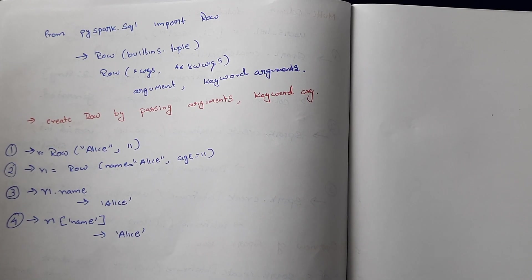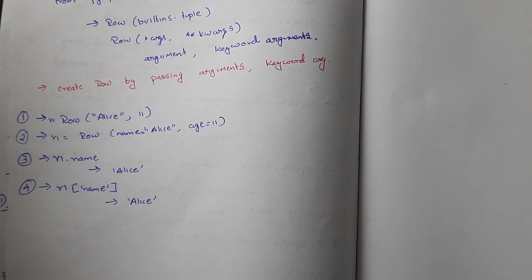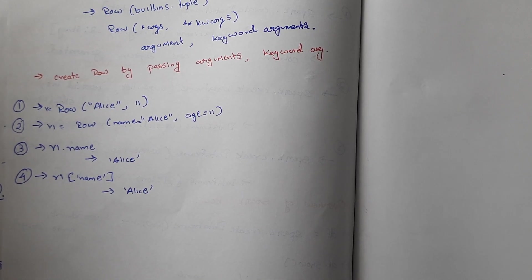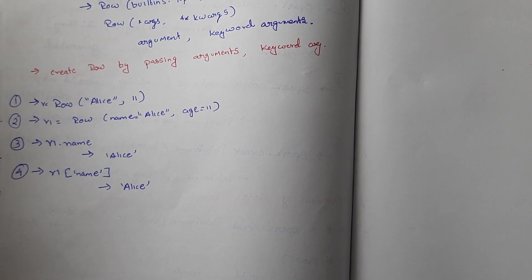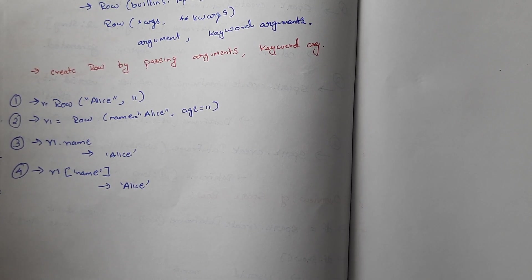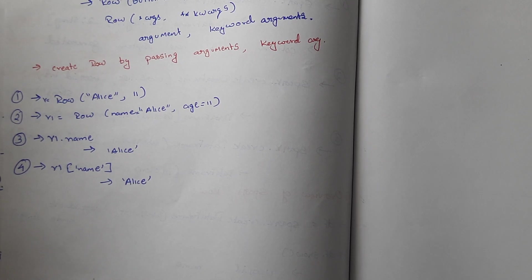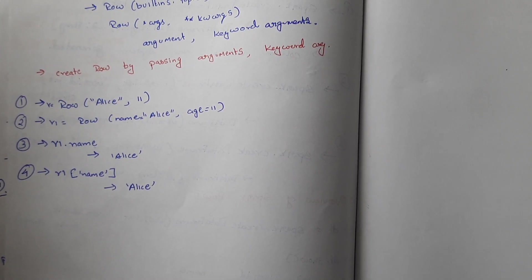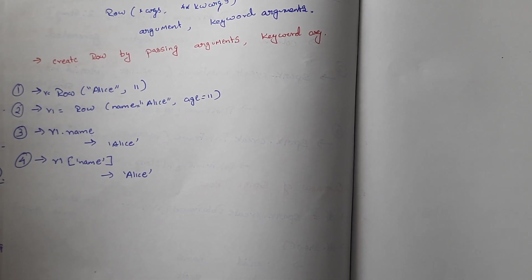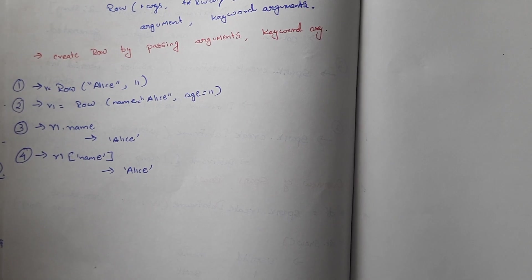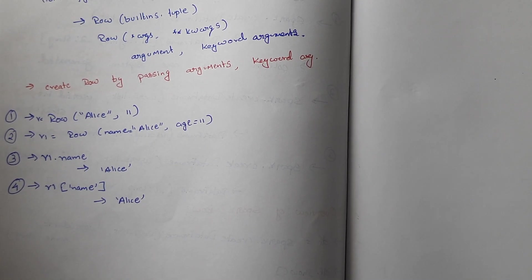Now we'll see how to import Row from pyspark.sql. Row is a built-in tuple that accepts arguments and keyword arguments. For example: r = Row('Alice', 11) creates a Row by positional arguments. Alternatively, r1 = Row(name='Alice', age=11) uses keyword arguments. You can access values with r1.name using dot notation, or r1['name'] using square bracket notation — both return the corresponding value.